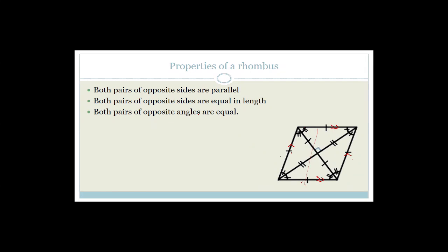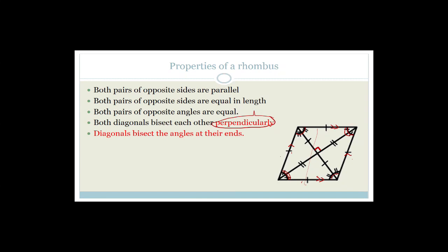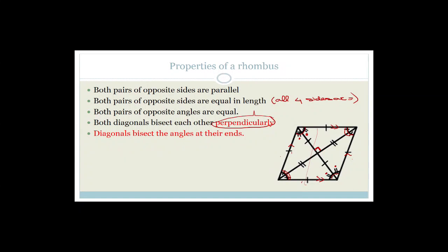Both pairs of opposite angles are equal — so this angle equals the opposite one, and that angle equals the other. The diagonals bisect each other, which we already knew, but now they bisect each other perpendicularly — that's new for a rhombus. The diagonals also bisect the angles at their ends, which is also new. And all four sides are equal.